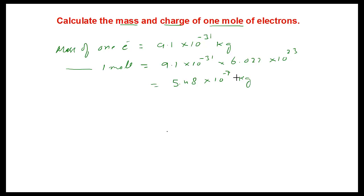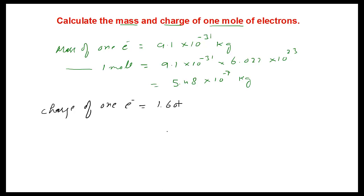Now let's find the charge of one mole of electrons. The charge of one electron is 1.6022 × 10⁻¹⁹ coulombs. So for one mole of electrons,